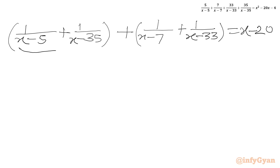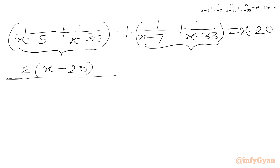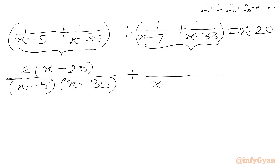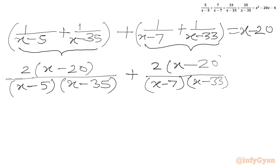Again we have to take LCM. So I will write x minus 35 plus x minus 5, which equals 2x minus 40; taking 2 common gives (x minus 20) in the bracket, over the denominator (x minus 5)(x minus 35). Similarly for the second pair: x minus 33 plus x minus 7 is 2x minus 40, again 2 times (x minus 20), over (x minus 7)(x minus 33). The RHS is also x minus 20.